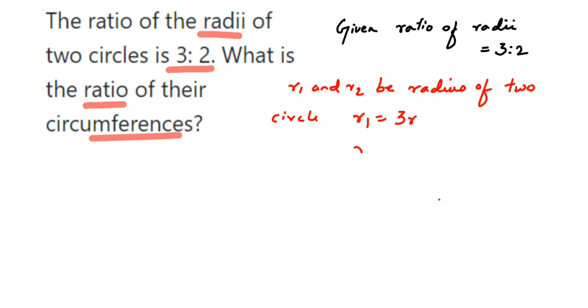So whenever ratios are given we take it like 3x or 2x, along with the ratio we take one variable that is a common factor. Because always ratios are given in reduced form so there will be always a common factor which cancels it. So here we're going to take it as 3r and 2r.